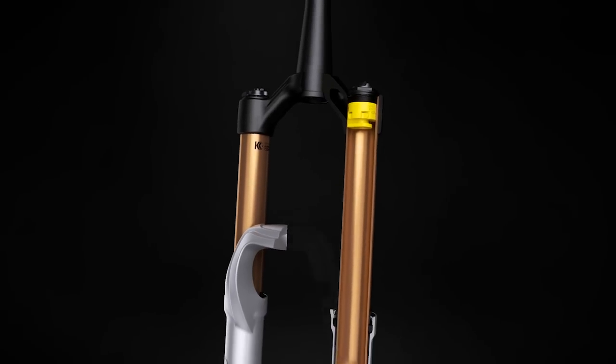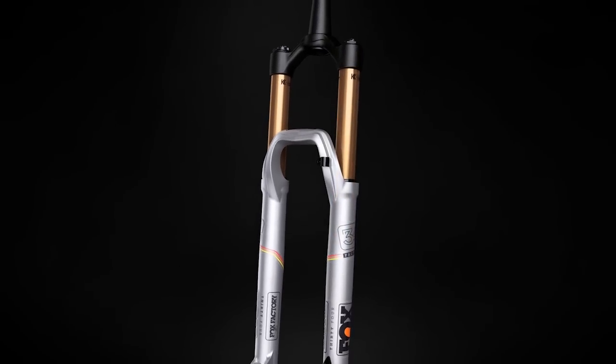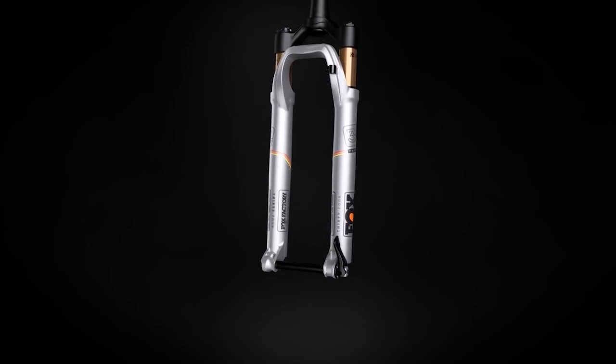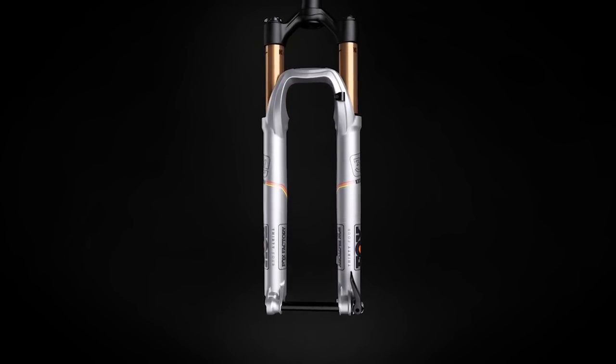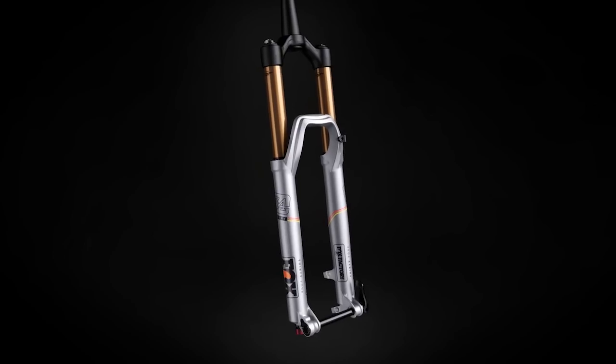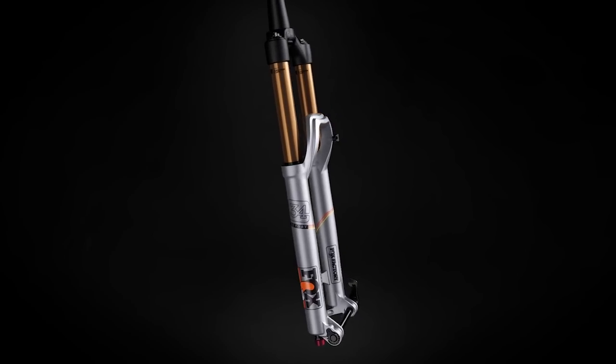Fox float forks offer a lightweight, highly tunable air spring that reduces feedback to the rider and provides increased sensitivity and traction. Available in 32, 34, 36, and 40 models, there's a float fork to match every type of riding out there.